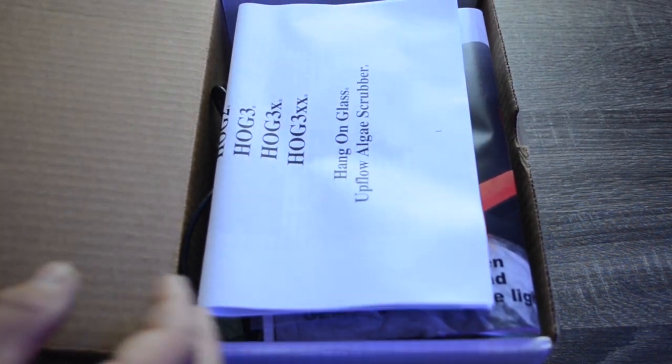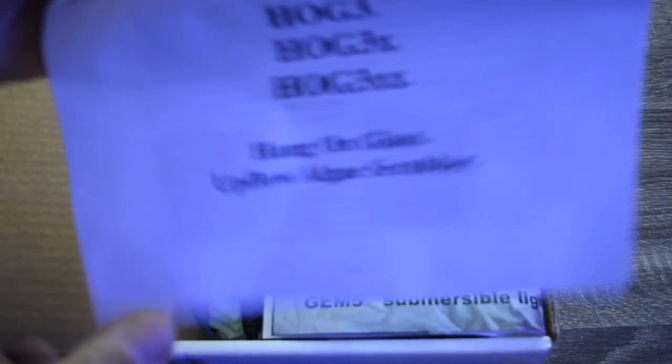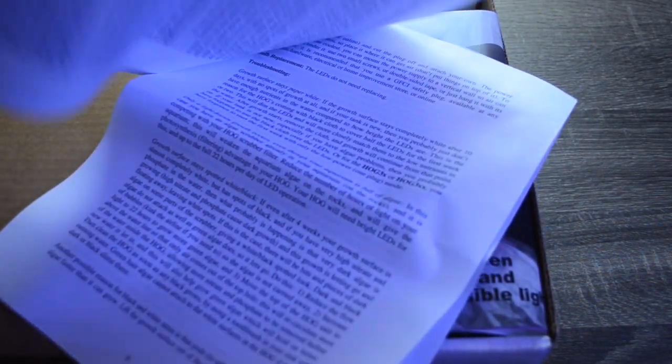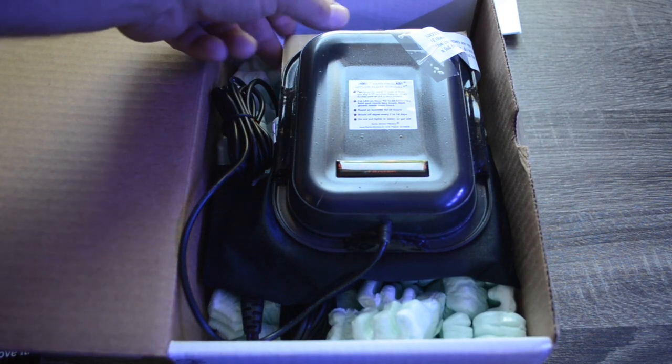First things first, right on top you have the Santa Monica Filtration box. It has all of the HOG model numbers and some quick instructions, which I always encourage you guys to fully read the instructions prior to using anything. And then we have the HOG One.